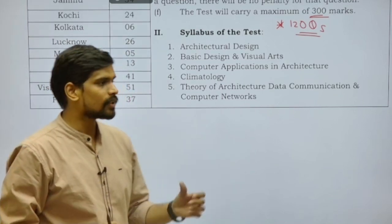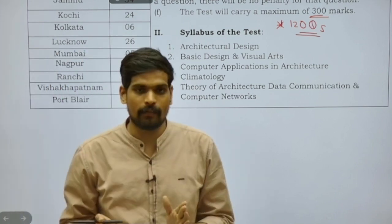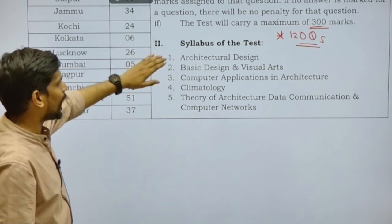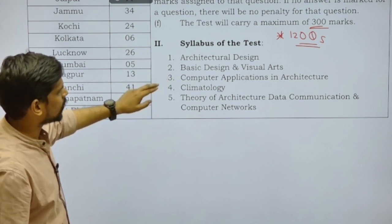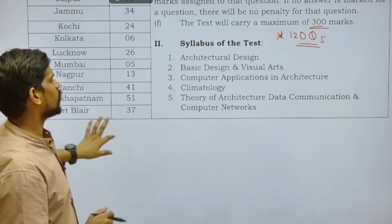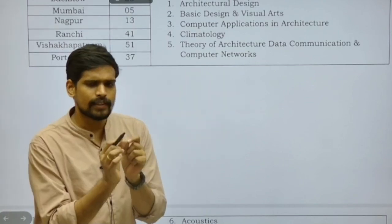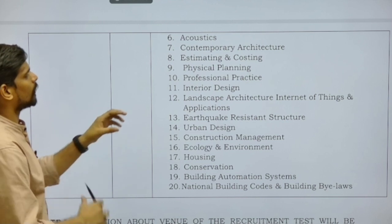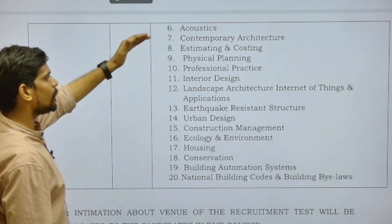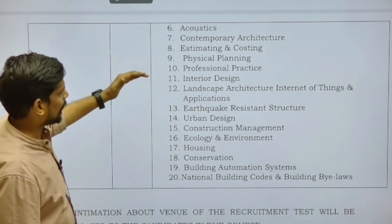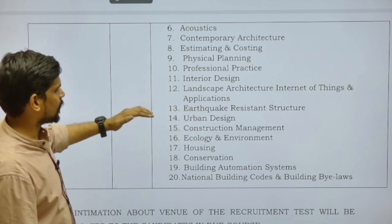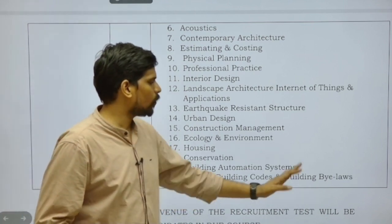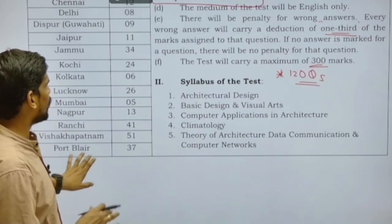Compared to last year's assistant architect examination, the syllabus more or less remains unchanged, with minor changes. There are 20 points given in the syllabus, which include: architectural design, basic design and visual arts, computer applications in architecture, climatology, theory of architecture, data communication and computer networks — which is a new addition to the syllabus, not present in the previous CPWD syllabus — acoustics, contemporary architecture, estimating and costing, physical planning, professional practice, interior design, landscape architecture, internet of things applications, earthquake-resistant structures, urban design, construction management, ecology and environment, housing conservation, building automation systems, and finally NBC — National Building Code — and building bylaws.